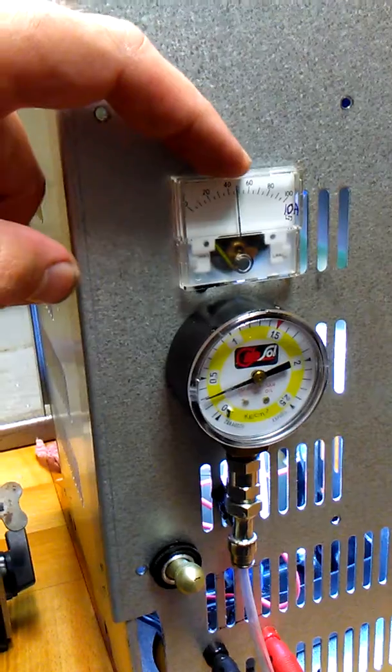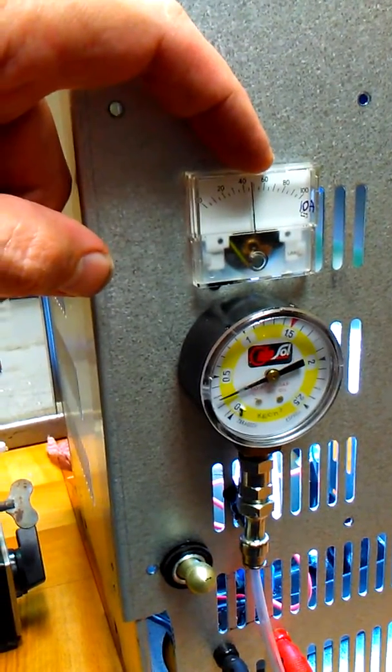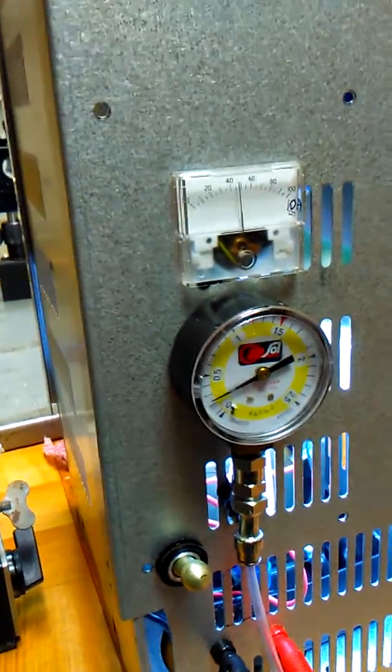Here we see current: 5 amps at 12 volts. It makes about 50 watts.